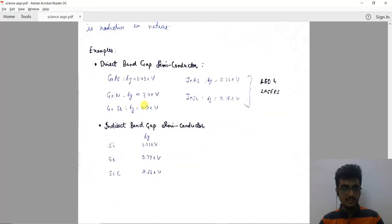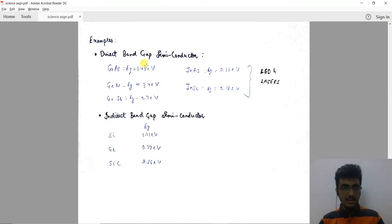So let us see some examples. Direct band gap semiconductors are gallium arsenide with Eg value equal to 1.40, which is the band gap energy. We have gallium nitride, GaSb, indium arsenide, InSb. These are also used to make LEDs and lasers.